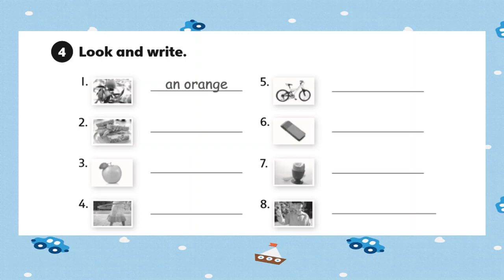Now, it says, look and write. We have some pictures we are going to write. The name of the object. Number one says, an orange. Number two, what is it? A sandwich. Good job.